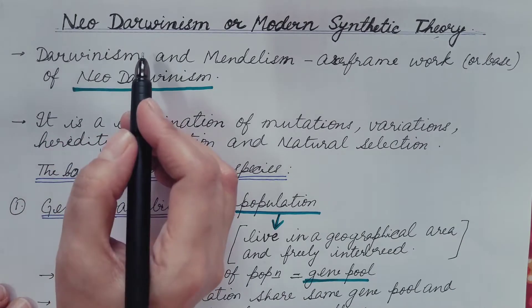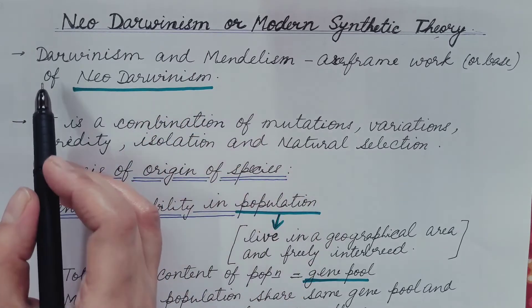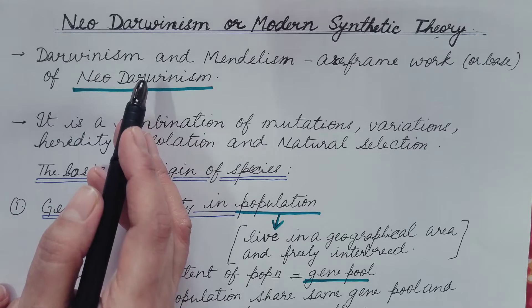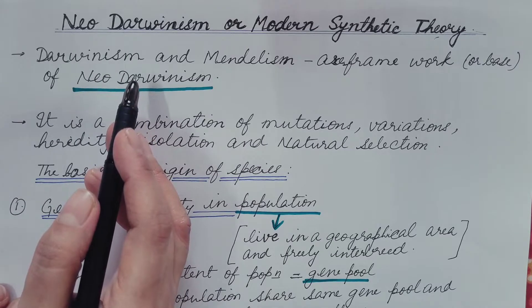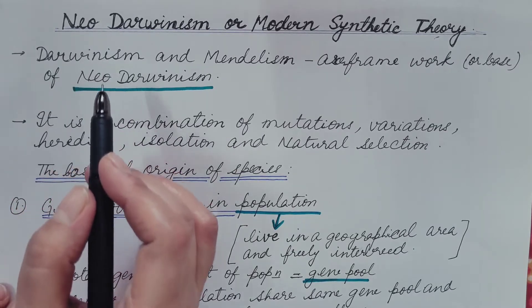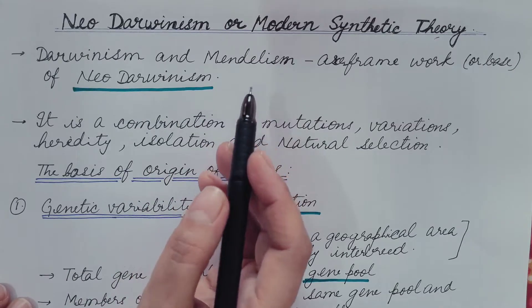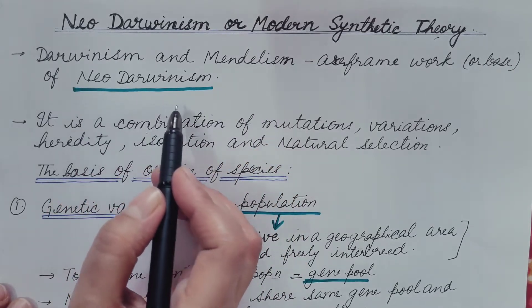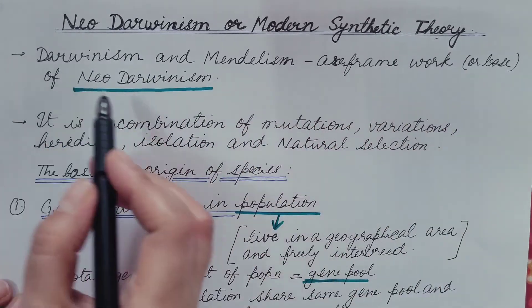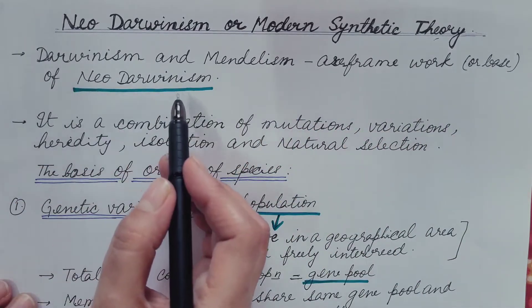So from Darwinism, we became familiar with the theory of natural selection, but there was certain criticism of Darwinism. He was not able to explain the causes of variation, hence the theory of natural selection was reviewed in the light of genetics and then came the Neo-Darwinism or modern synthetic theory. So Darwinism and Mendelism are framework or base of Neo-Darwinism.